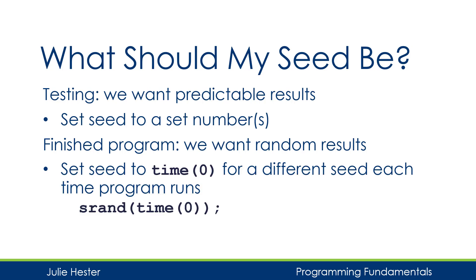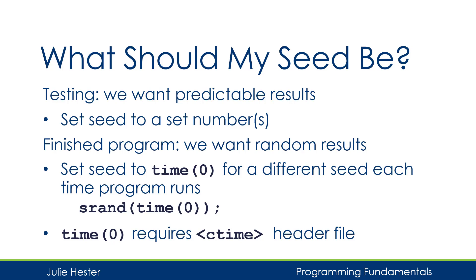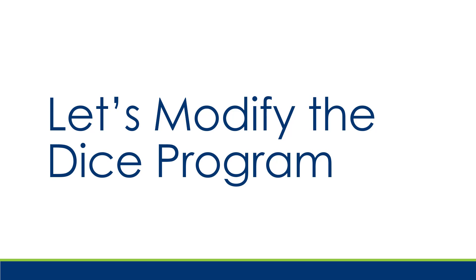What a lot of people do is use a number generated from the system time by calling time(0), and that will be input into the random number generator seed. Every time the program runs, the value of time(0) is going to be different, so we effectively seed the random number generation with a different value each time. One caveat: if you want to use the time function you will also need to add the ctime header file. Now that we know how to seed the random number generation, let's modify the DICE program.